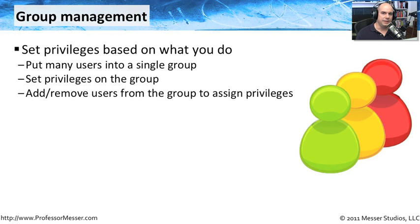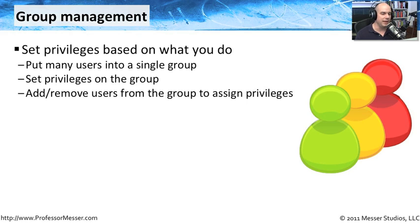Group management is a little different. We set privileges based on what individuals do in the organization by putting many different people into a group — maybe an accounting group, a marketing group, a shipping and receiving group — and we set privileges for the entire group all at once. If we need to change or modify those privileges, we do it for everyone in that group. If somebody joins the marketing department, we put them in the marketing group, and like magic they have access to everything the marketing group needs. It makes the administrative process much more streamlined.